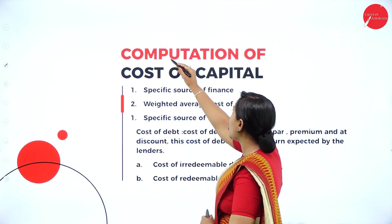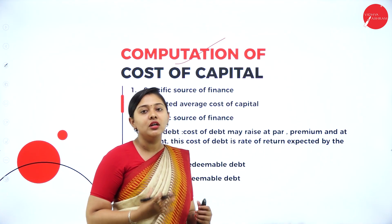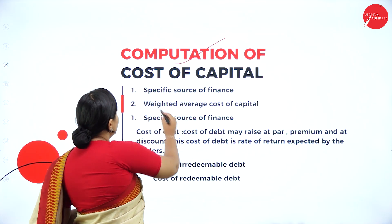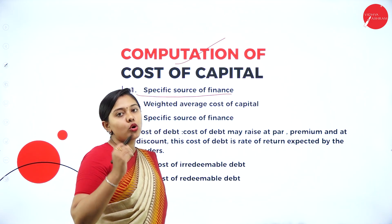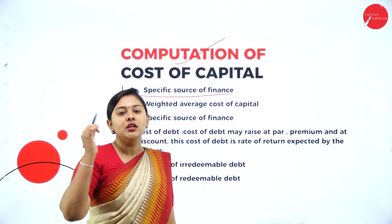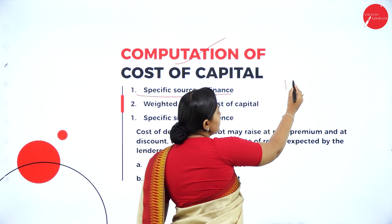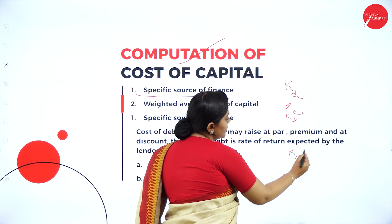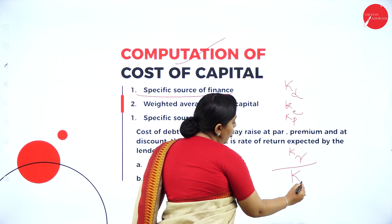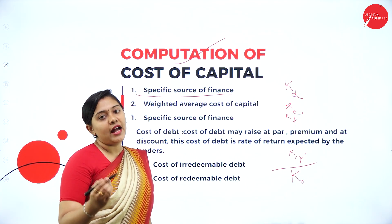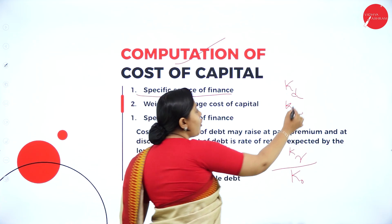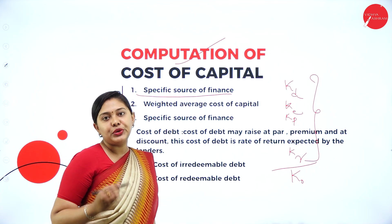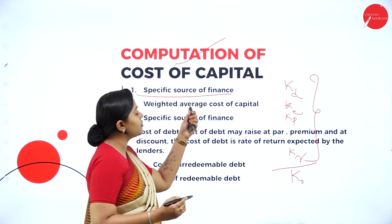Moving forward to computation of cost of capital — the first step is to calculate the specific cost of each source of finance: cost of debt, cost of equity, cost of preference, and cost of retained earnings. Symbolically these are represented individually, and together they form the overall cost of capital or weighted average cost of capital. The computation of each source of finance cost is called specific cost.